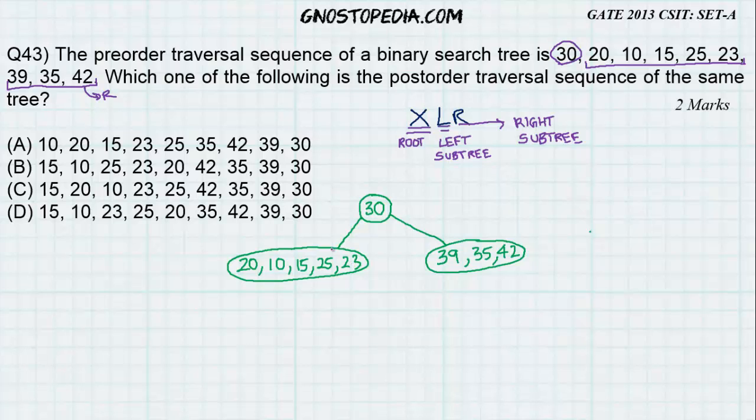Now, you know for a fact that 20 is the root node because the pre-order traversal states that. So, in this left subtree, 20 will be the root node and can you guess what will be the left subtree? Yes, you guessed it right, 10 and 15 will be the left subtree because it is less than 20 and 25 and 23 will be the right subtree.